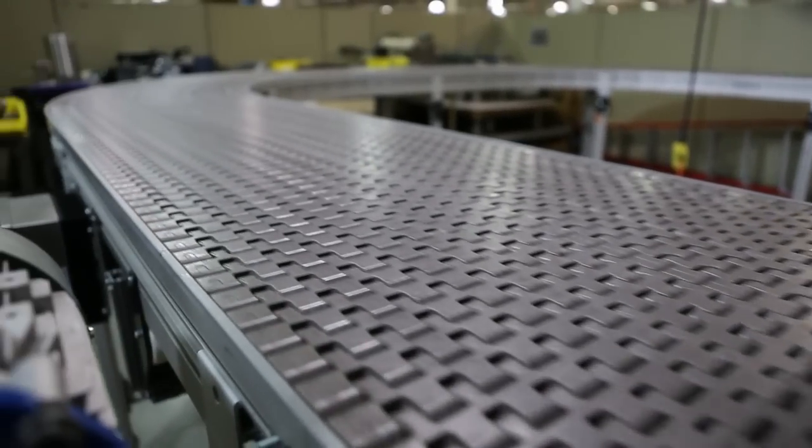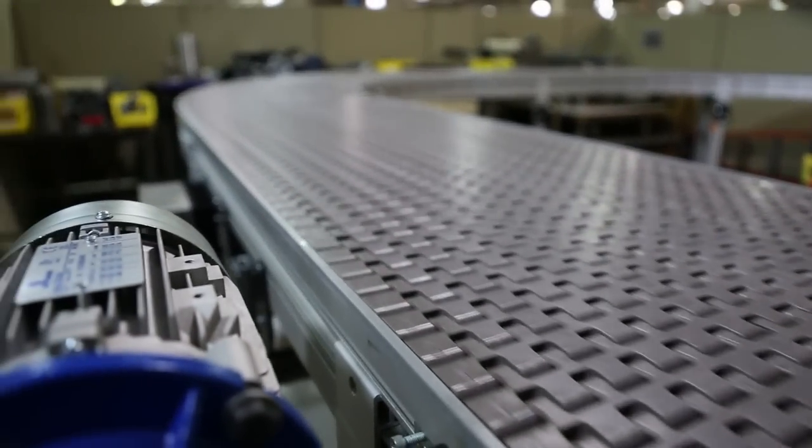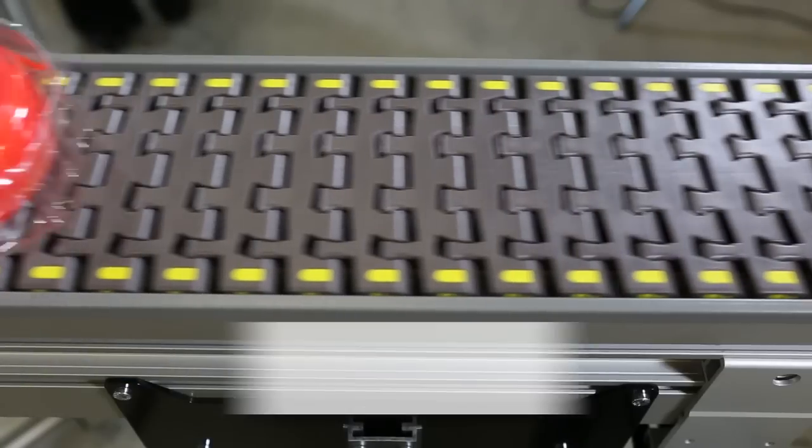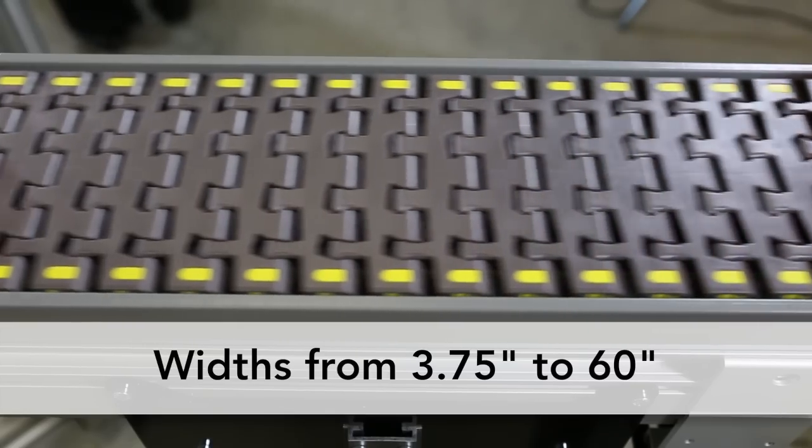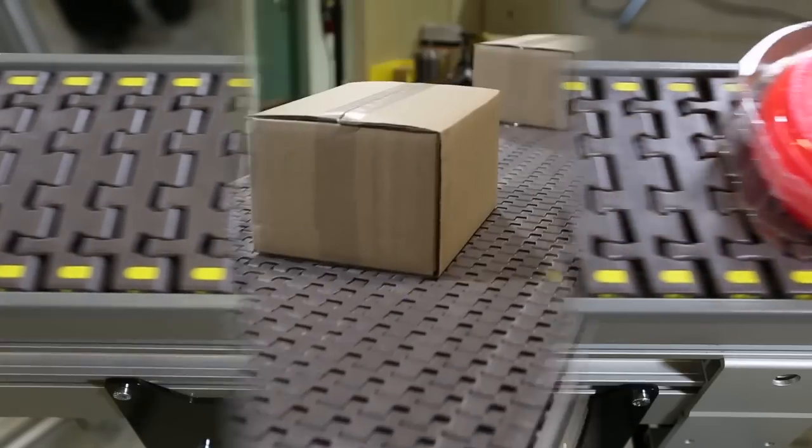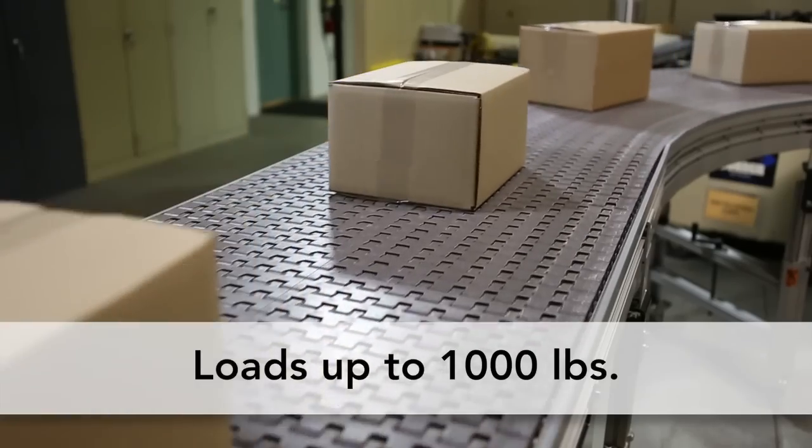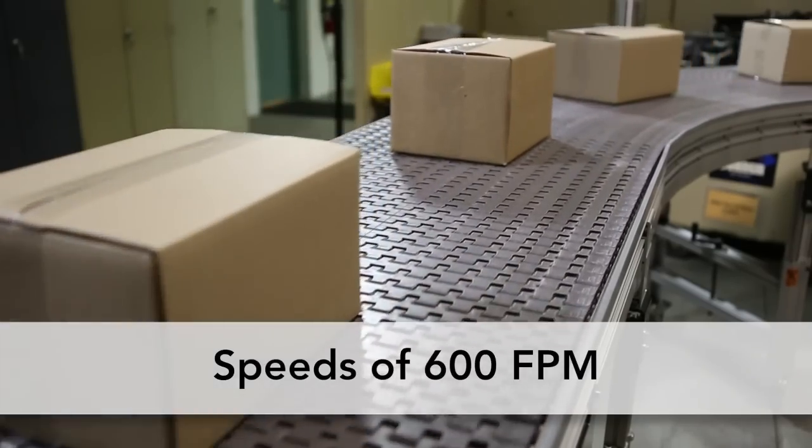And lengths from 3 feet to 99 feet. 3200 Series Conveyors are available in widths from 3.75 inches to 60 inches. It can handle loads up to 1,000 pounds and can run at speeds up to 600 feet per minute.